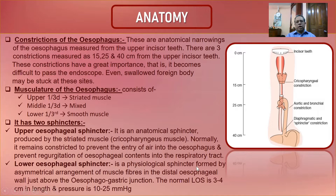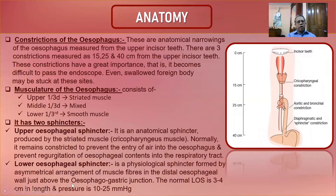The lower esophageal sphincter is a physiological sphincter — not an anatomical one. It is formed by the asymmetrical arrangement of muscle fibers in the distal esophagus just above the esophagogastric junction. The normal lower esophageal sphincter is 3–4 cm in length with a resting pressure of 10–25 mmHg.